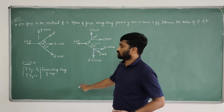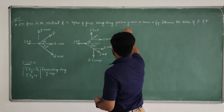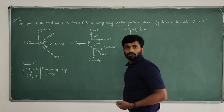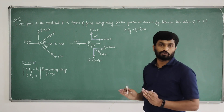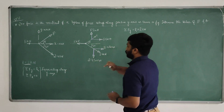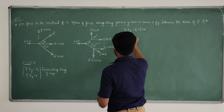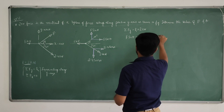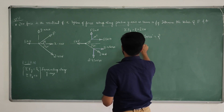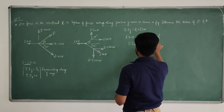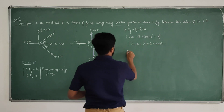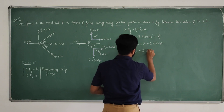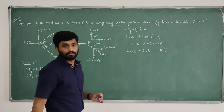Now apply the first condition: sigma Fy equals R, which is 2 kilonewton. Summing all vertical forces: F sin theta minus 2.4 sin40 equals 2. Therefore, F sin theta equals 2 plus 2.4 sin40, which gives F sin theta equals 3.54. This is equation number 1.